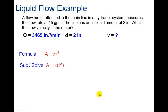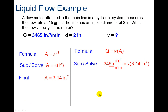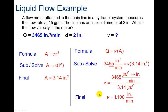We also need to find the area, which is pi r squared, giving us 3.14 inches squared. Now I'm ready to plug in my values into Q equals V times A and solve for the final velocity: 1,100 inches per minute.